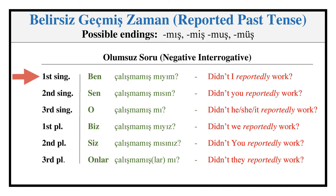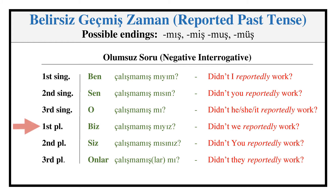Evidential Past — Negative Interrogative: ÇALIŞMAMIŞMIYIM, ÇALIŞMAMIŞMISIN, ÇALIŞMAMIŞMI, ÇALIŞMAMIŞMIYIZ, ÇALIŞMAMIŞMISINIZ, ÇALIŞMAMIŞLARMI?